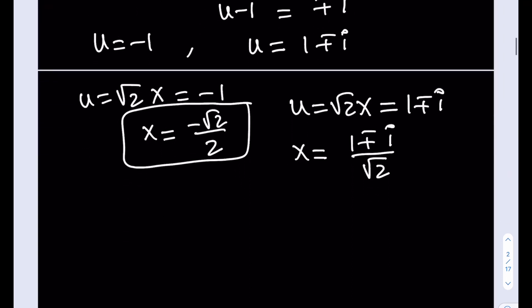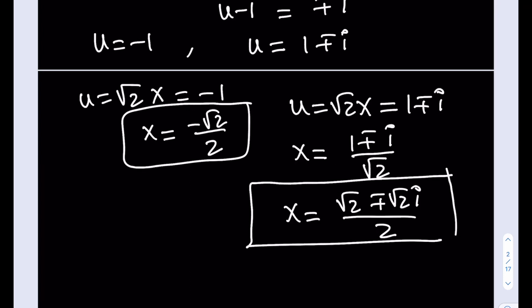If you want to rationalize the denominator, I mean, no big deal, but you're going to be getting multiply by root 2. You're going to get root 2 plus minus root 2i divided by 2. And these are going to be the complex solutions to our equation.